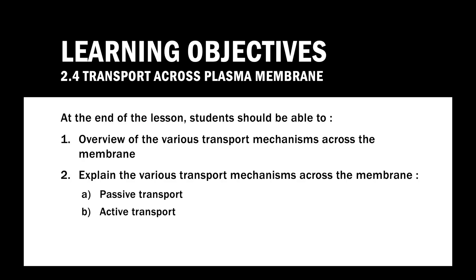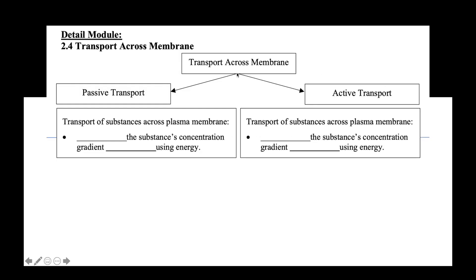These are the learning objectives that you need to complete at the end of the lesson. Students should be able to make an overview of the various transport mechanisms across the membrane, and also explain them. These include passive transport and active transport. There are two types of transport across the membrane: passive transport and active transport.